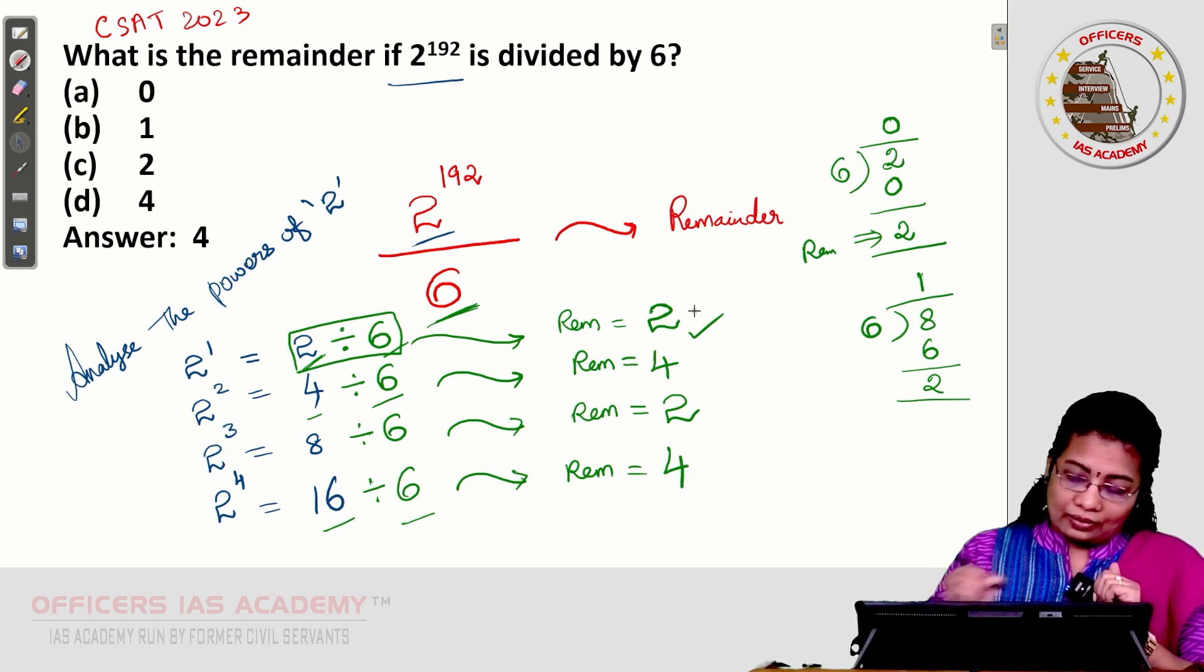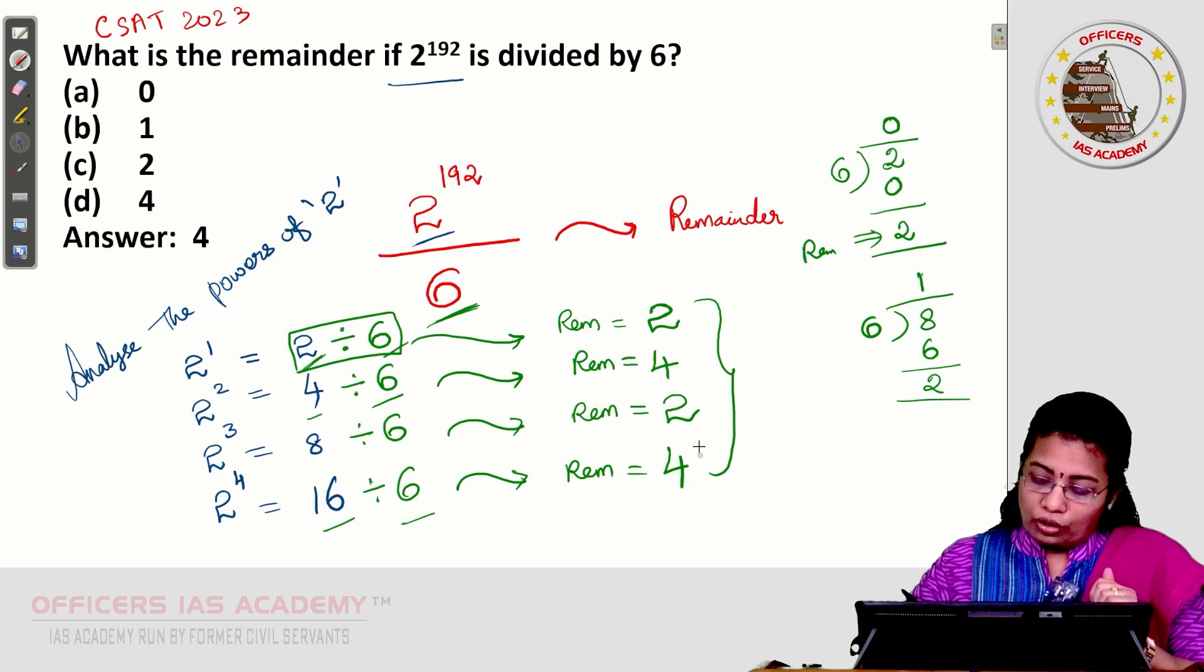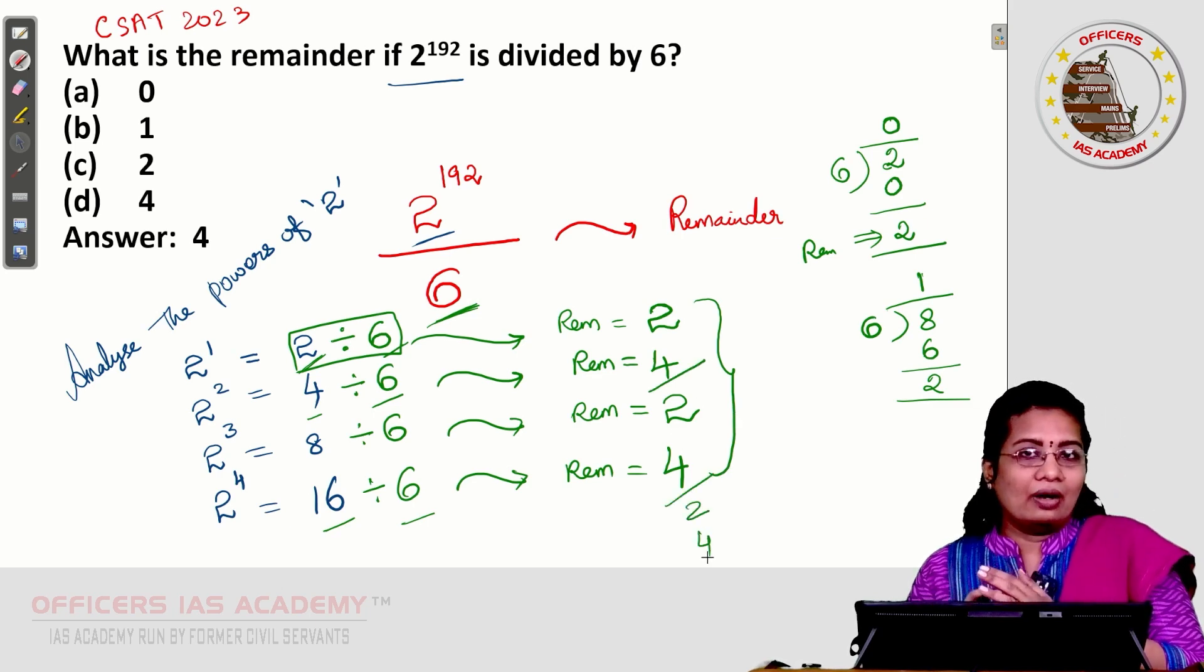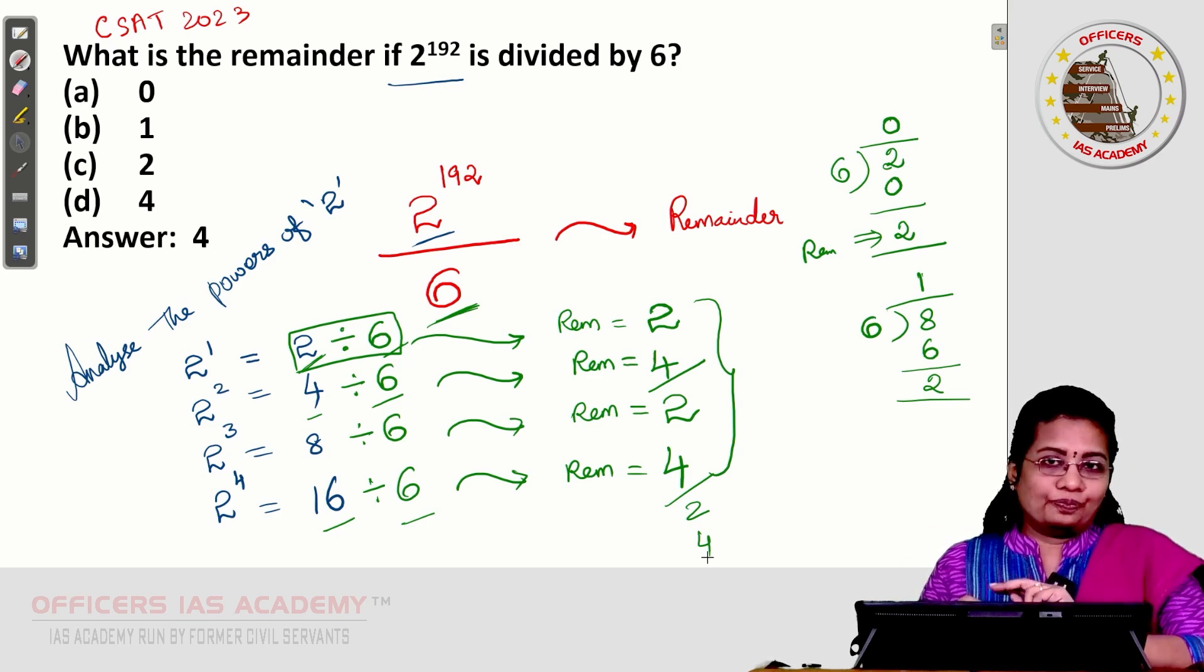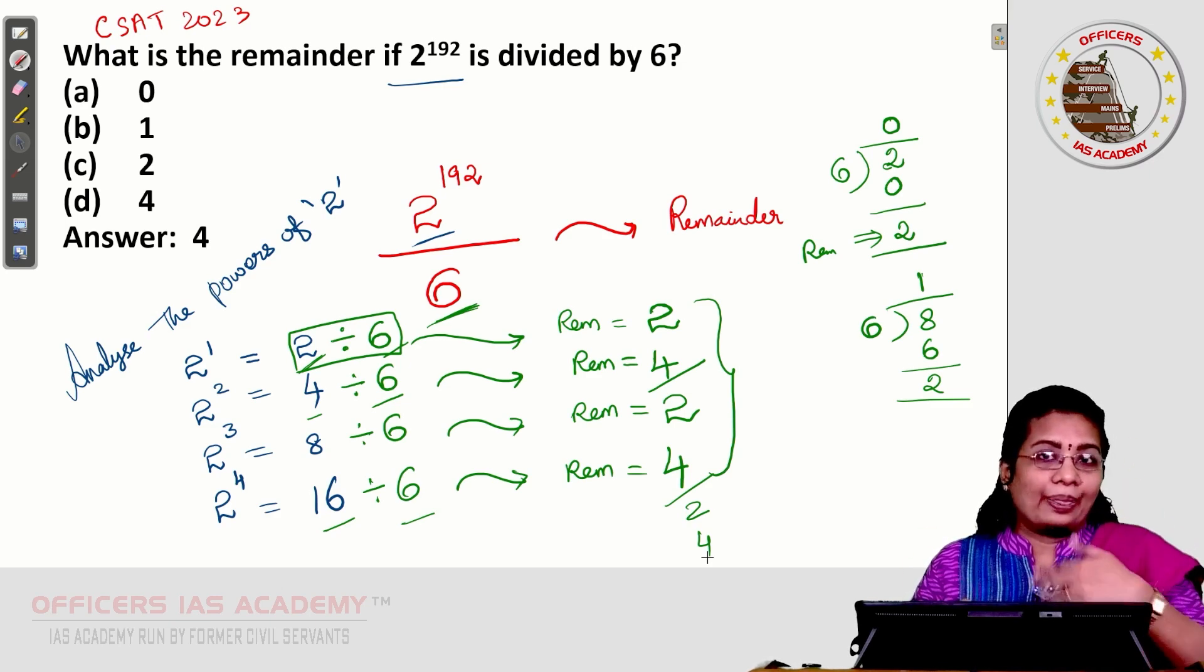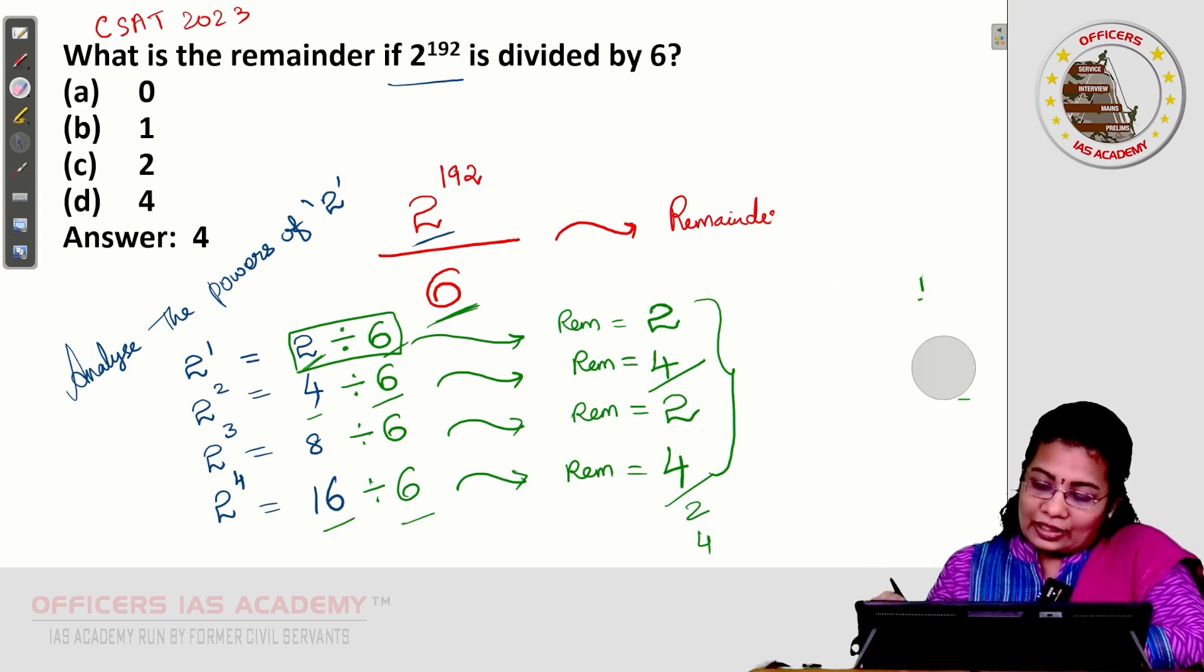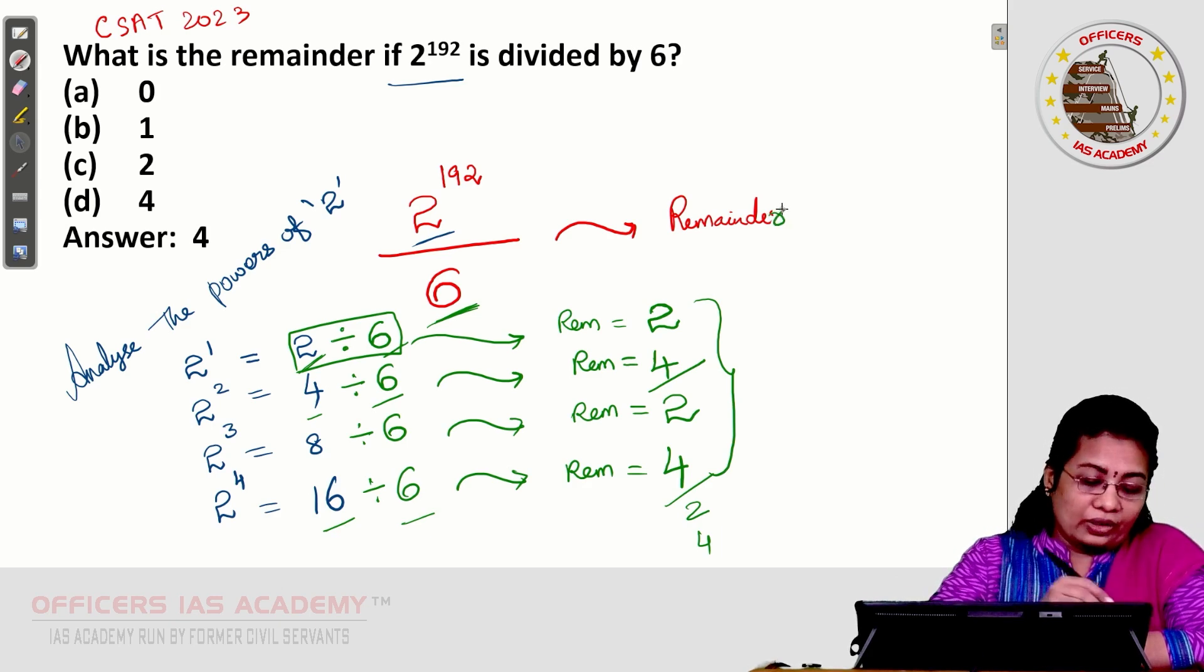Look at the pattern. What is the similarity you can see here? 2, 4, after that 2, 4, again you will get 2, 4. This is the pattern. The cyclicity of the remainder is 2. After 2 numbers, they are repeating themselves. The remainder concepts are in the repetition mode after 2 numbers.